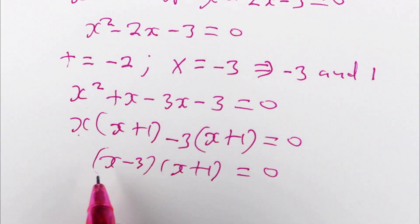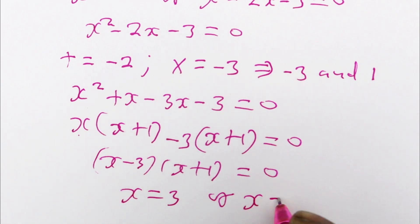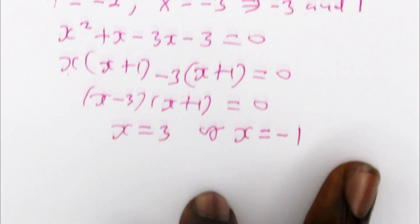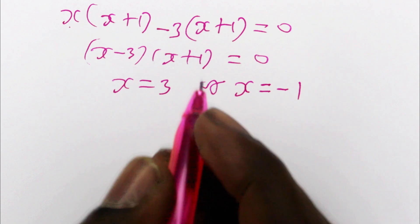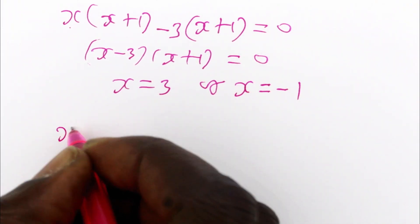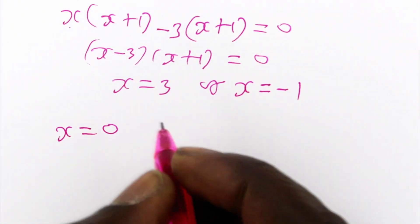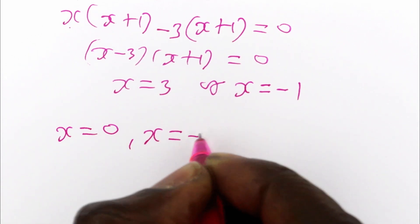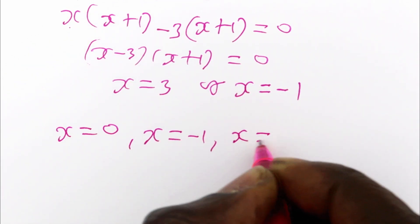So it means either of this is equal to 0. So if the first one is equal to 0, then x is equal to 3. And if the second one is 0, then x is minus 1. So we have the three values of x: x equal to 0 as we found before, and x equal to negative 1, and also x is equal to 3.